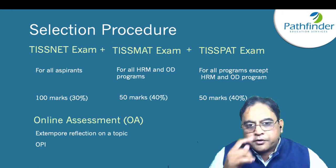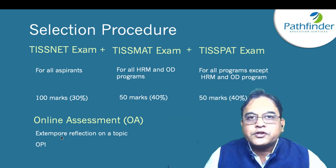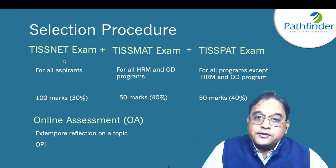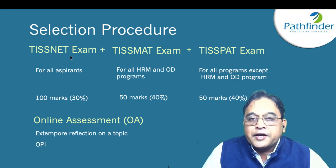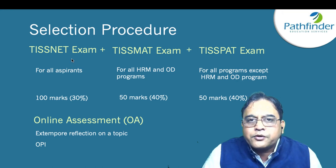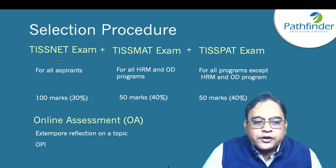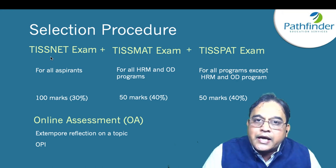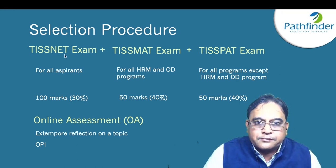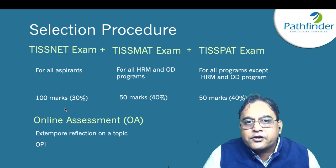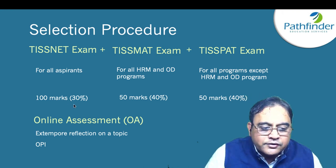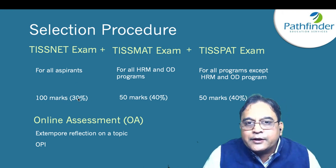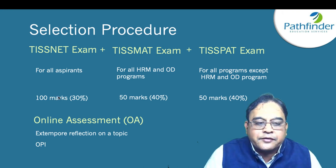The selection process: the first stage is the TISnet exam — National Eligibility Test of Tata Institute of Social Sciences — which every applicant must write. This exam has 100 questions of 100 marks and carries 30% weightage in the entire selection process.